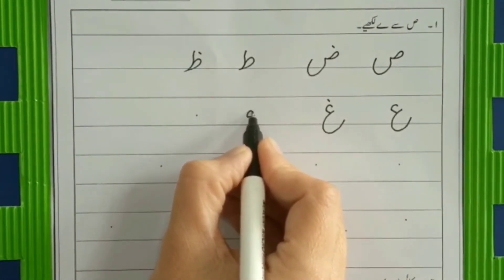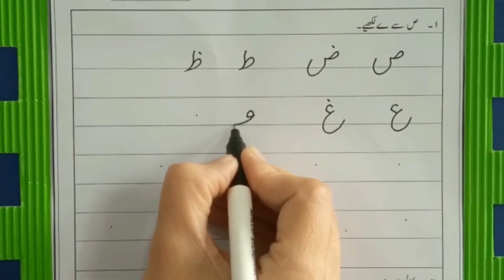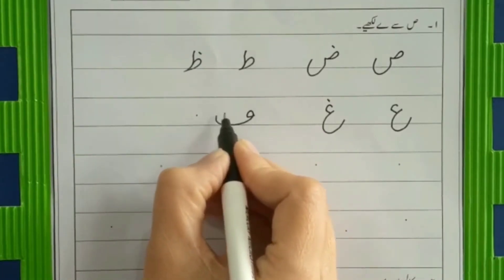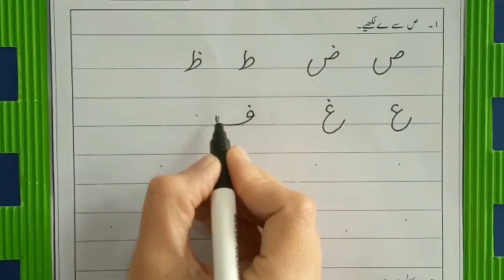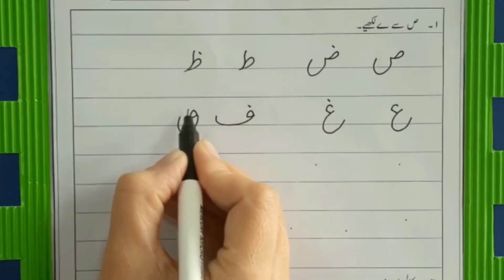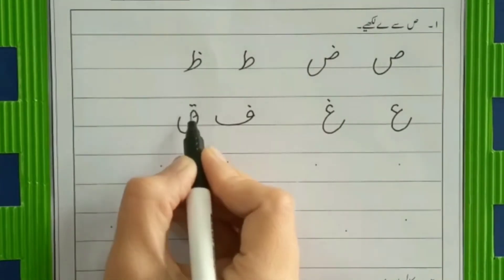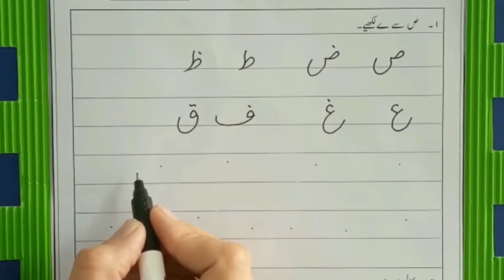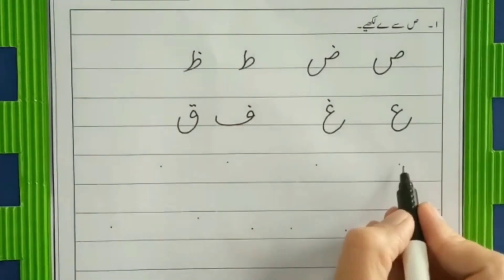Now next half is fae. Go round, make its head, and then make a bae with one dot. Fae. Then cough. Pick a hat. And cough is heavy, two dots on the hat.